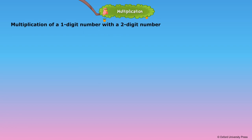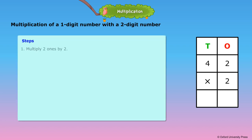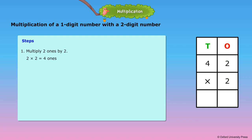Multiplication of a one-digit number with a two-digit number. Let us multiply the two-digit number 42 by the one-digit number 2. Step 1: Multiply two ones by 2. 2 × 2 = 4 ones. Step 2: Write 4 in the ones place.